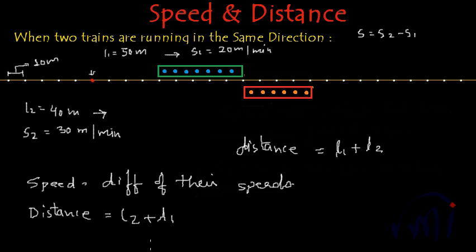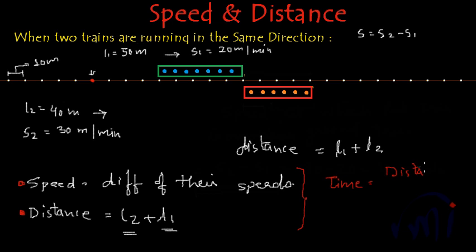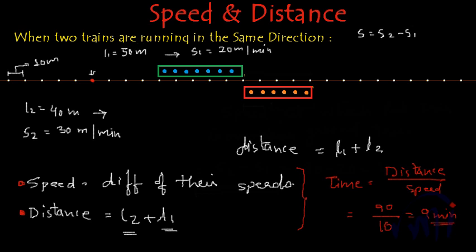Now you have the speed and the distance, so you can use the time formula: time = distance ÷ speed. In this particular case, the distance is 50 + 40 = 90 meters and the relative speed is 10 meters per minute. So it will take 90 ÷ 10 = 9 minutes for the red train to overtake the green train completely.